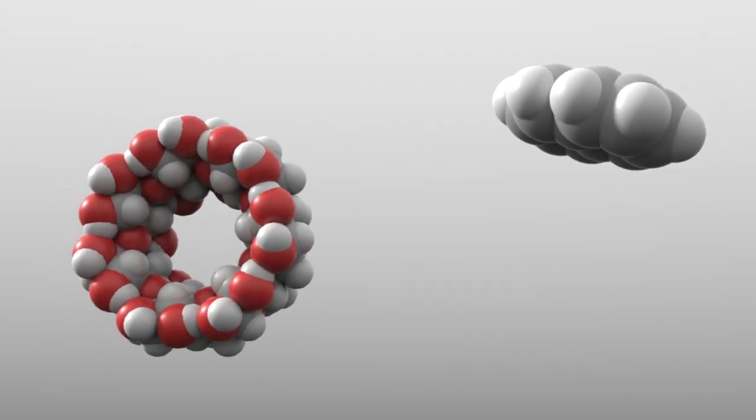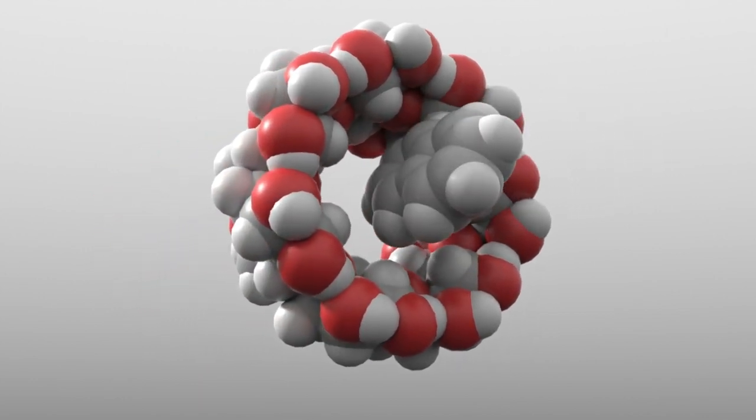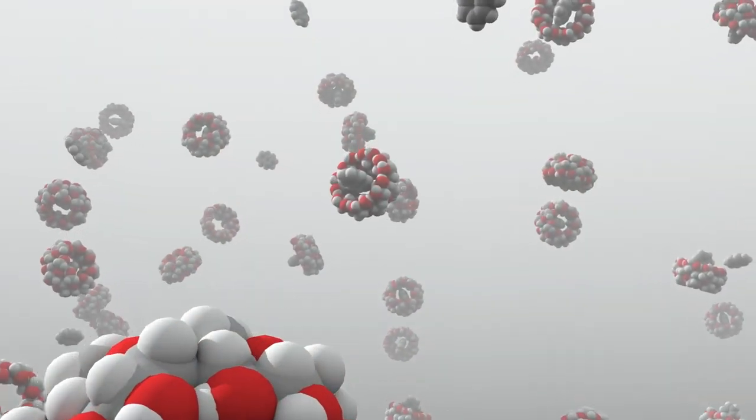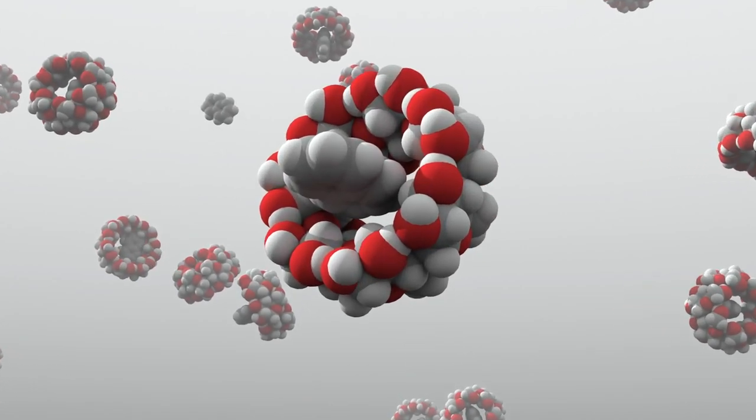When it's used in deodorizers, the hole inside cyclodextrin can trap unwanted odor molecules. When it's used in drugs, the hole can carry medicines that can then be delivered to the affected part of the body.